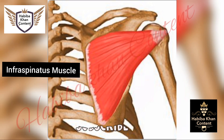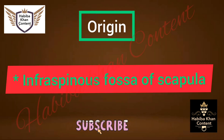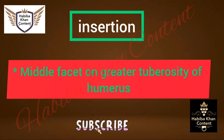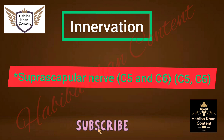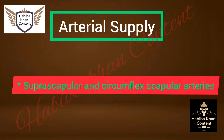Infraspinatus muscle. Origin: infraspinous fossa of scapula. Insertion: middle facet on greater tuberosity of humerus. Action: external rotator of the shoulder joint; with arm fixed, abducts the inferior angle of the scapula. Innervation: suprascapular nerve C5 and C6. Arterial supply: suprascapular and circumflex scapular arteries.